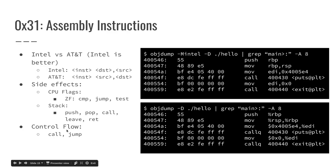There are a couple of instructions that modify RIP the instruction pointer directly, and those are call and jump. When I call a function, the instruction pointer is set to the starting address of the function being called. Jump does the same thing except you're not calling a function — it's just going to another part of the current function, or maybe to another function. Both modify the instruction pointer directly.